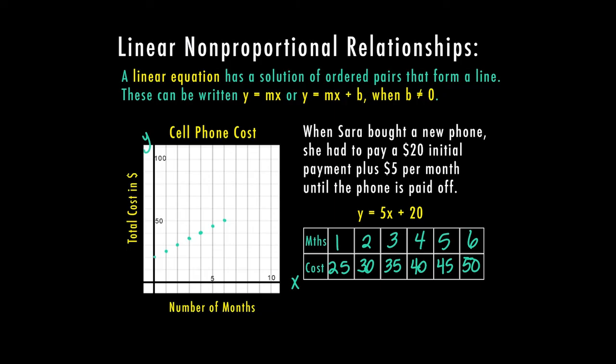We want to connect those points on our graph. That ends up showing us our equation here, our linear non-proportional relationship. It is linear. It does increase by $5 per month. So it's a consistent slope, or in this case, your k, which is your constant of variation, but it doesn't start at zero zero because we do have an initial payment of $20.